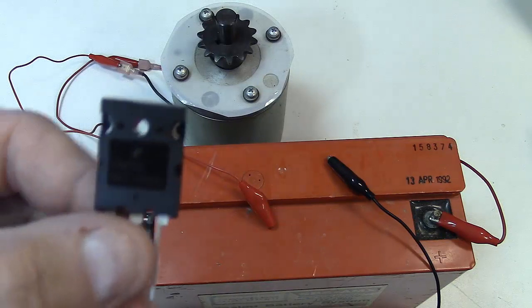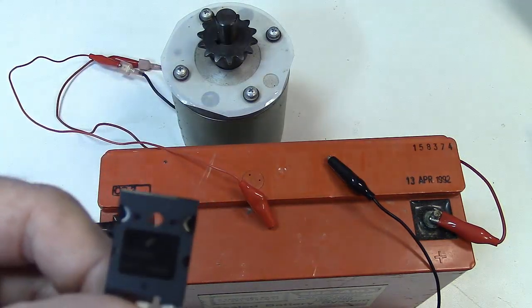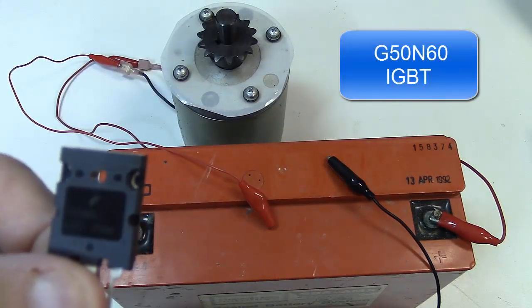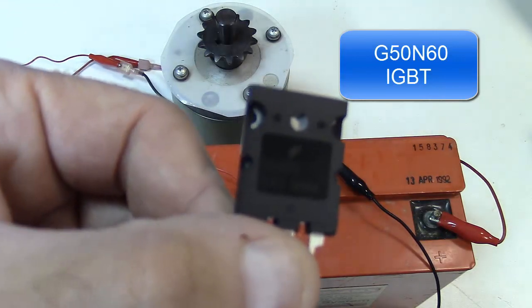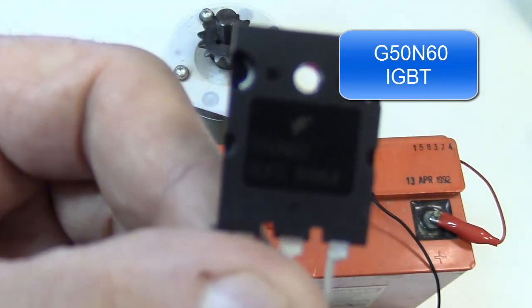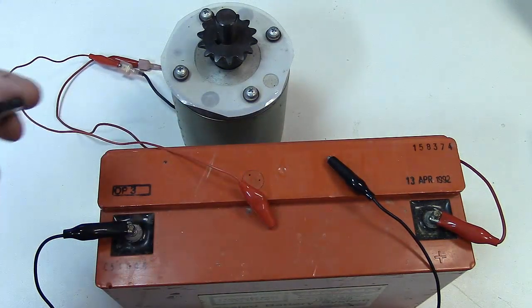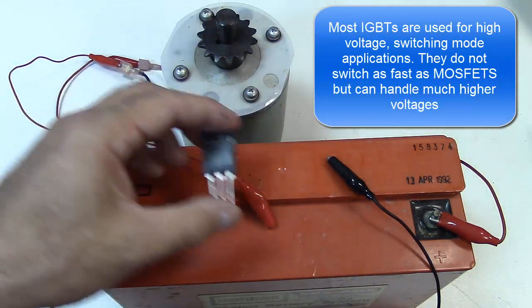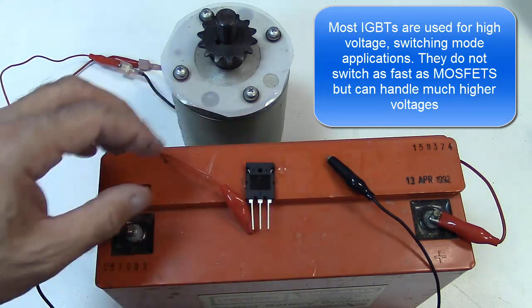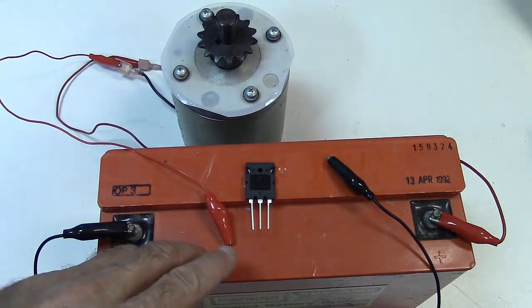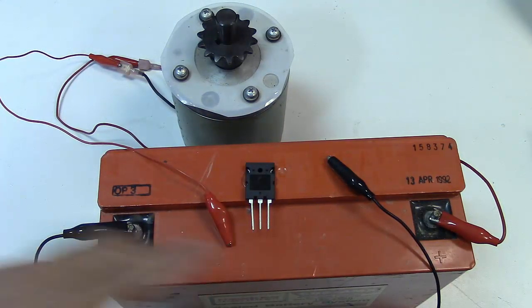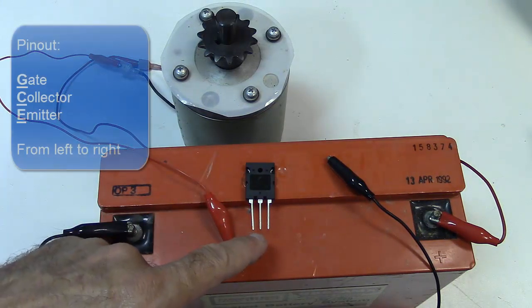So here's an IGBT. This IGBT is actually a G50N60. I don't know if you can read that or not. And this is a 600 volt 75 amp IGBT.